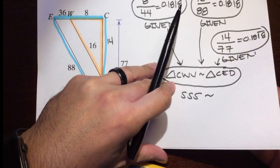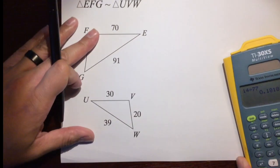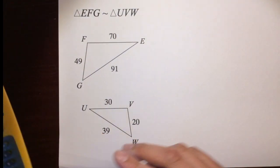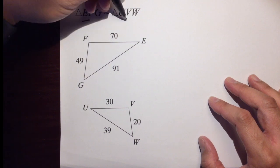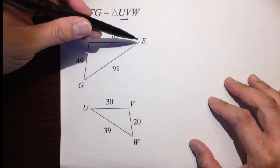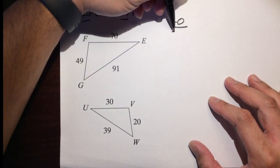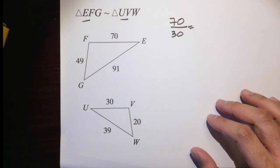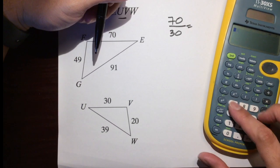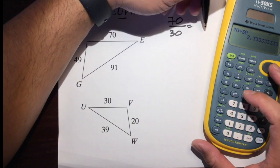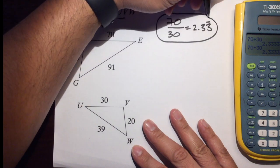Last example. Let's prove that triangle EFG is really similar to triangle UVW. Let's go EF to UV: EF is 70 over UV, which is 30. We can simplify that to 7 over 3. So 70 divided by 30 is 2.3 repeating. The reason: given.